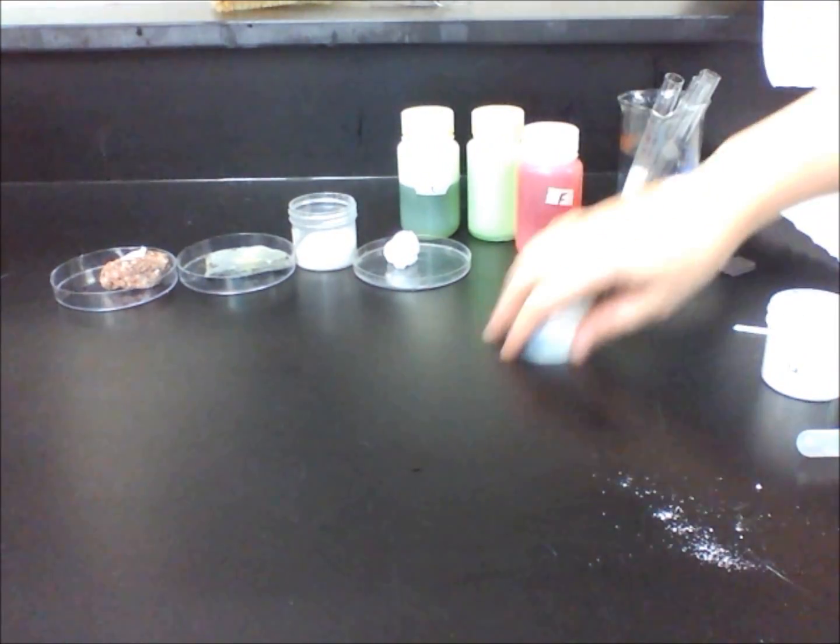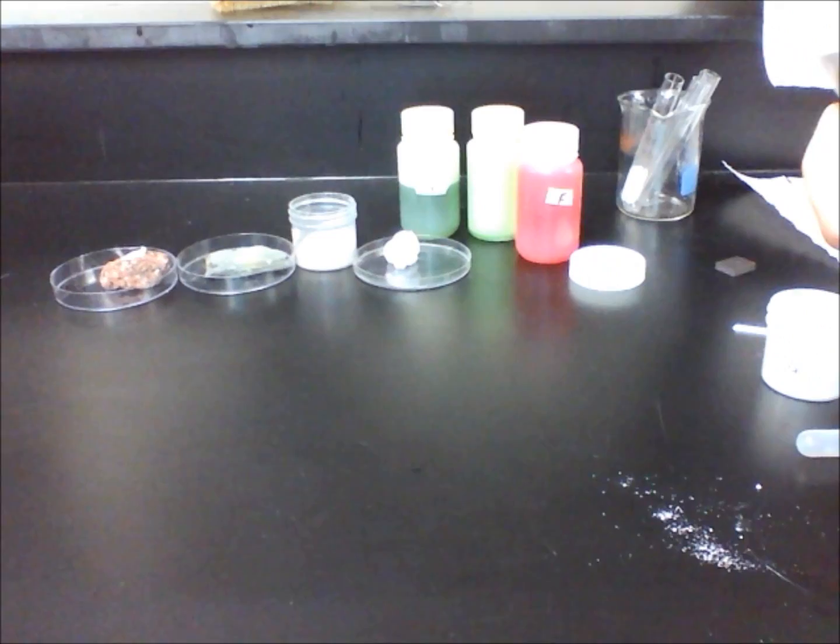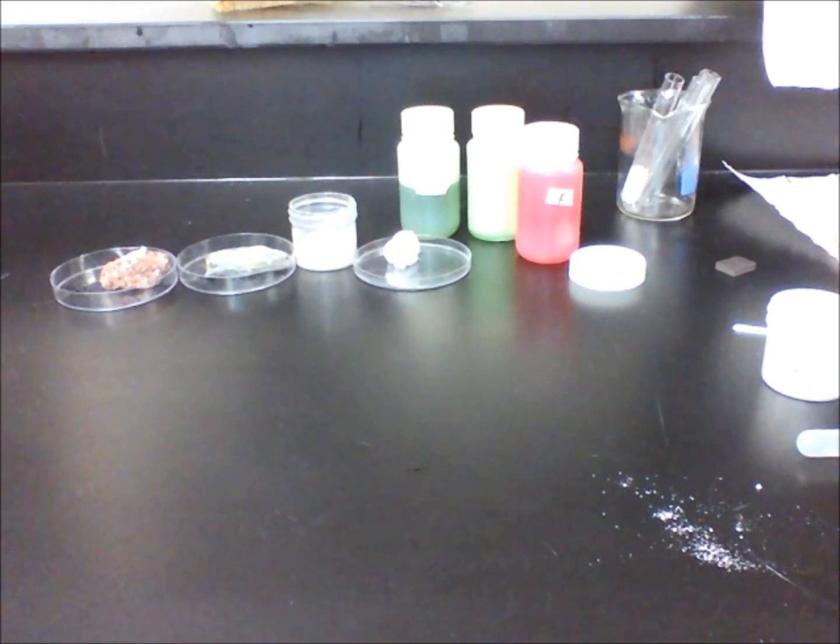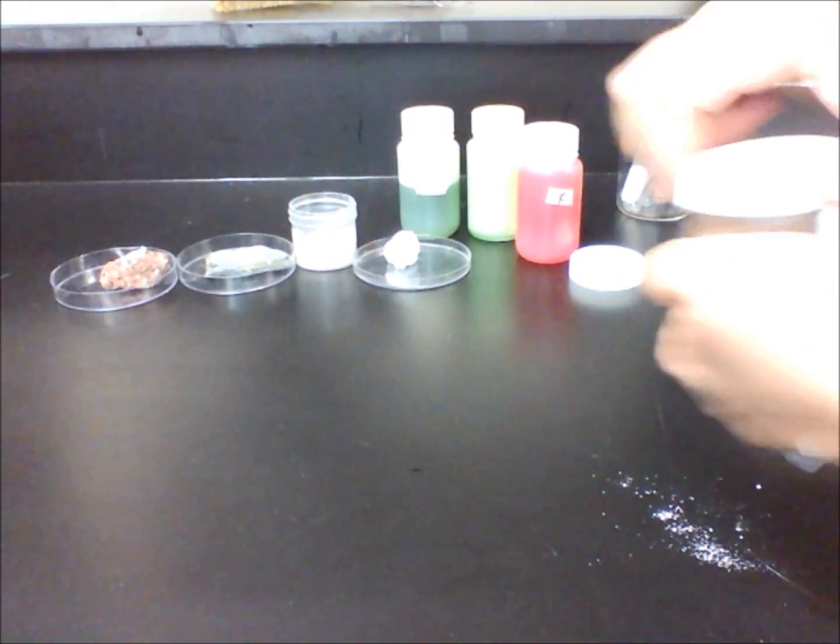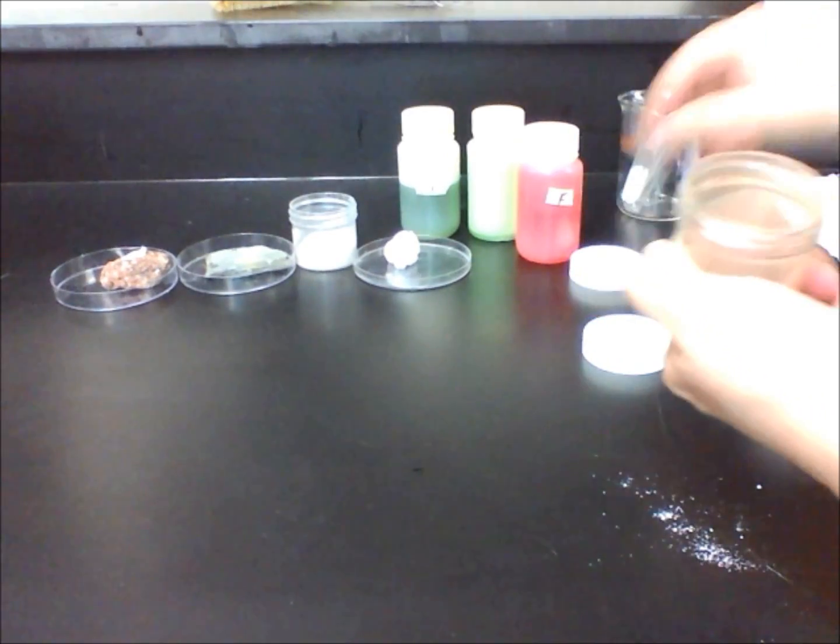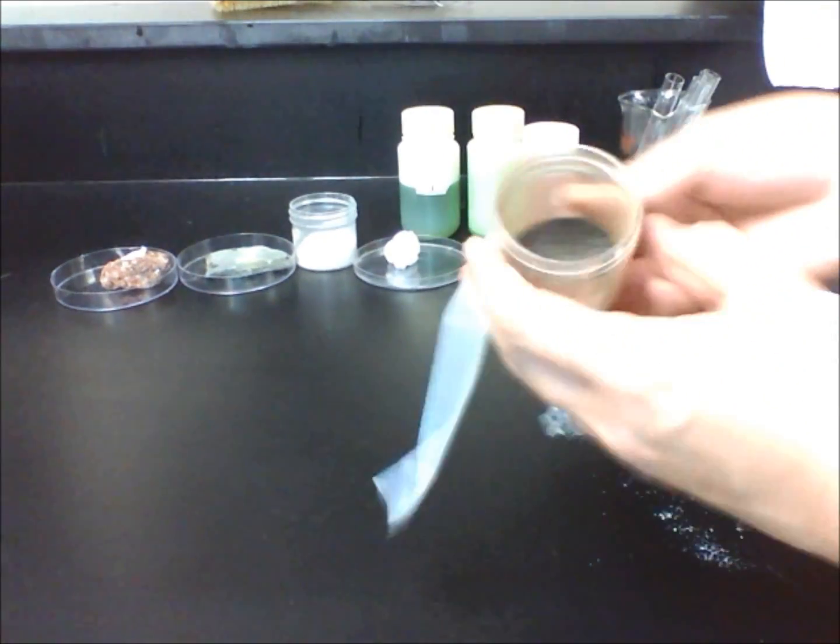Sample H is a sample of iron and sulfur. Using a magnet, the two substances can be physically separated. Therefore, this is a mixture.